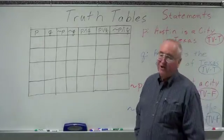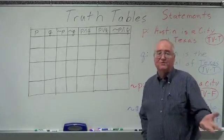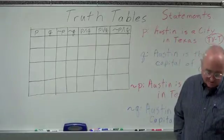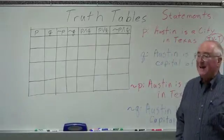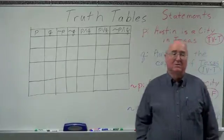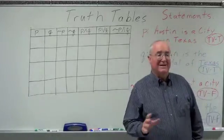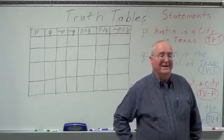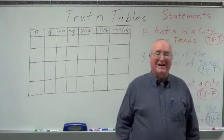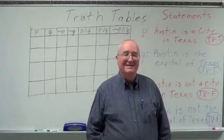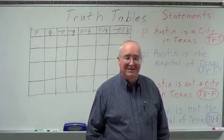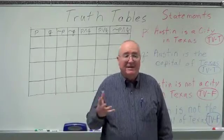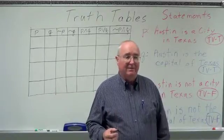The truth value is the truth or falsity of that statement. Negation is making that statement the opposite of what it is. For example, 'It is raining outside' — 'not' is the negation of that.